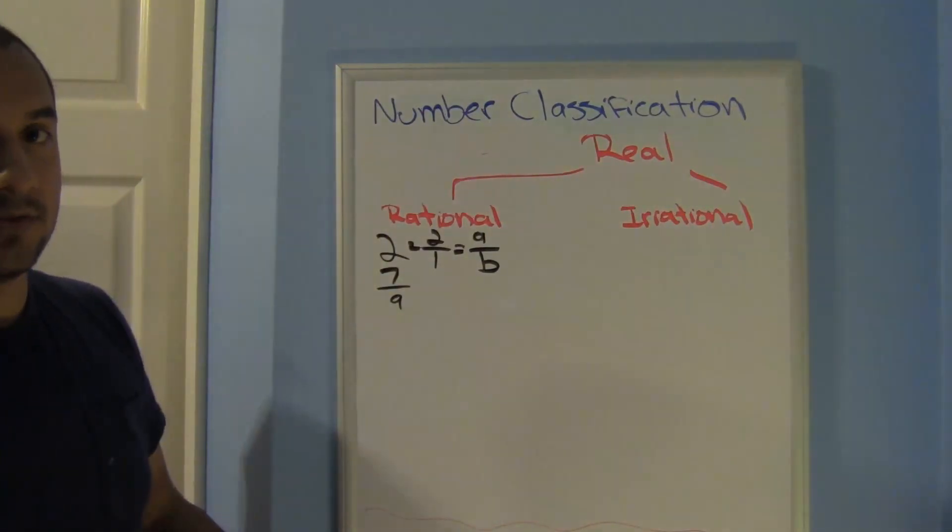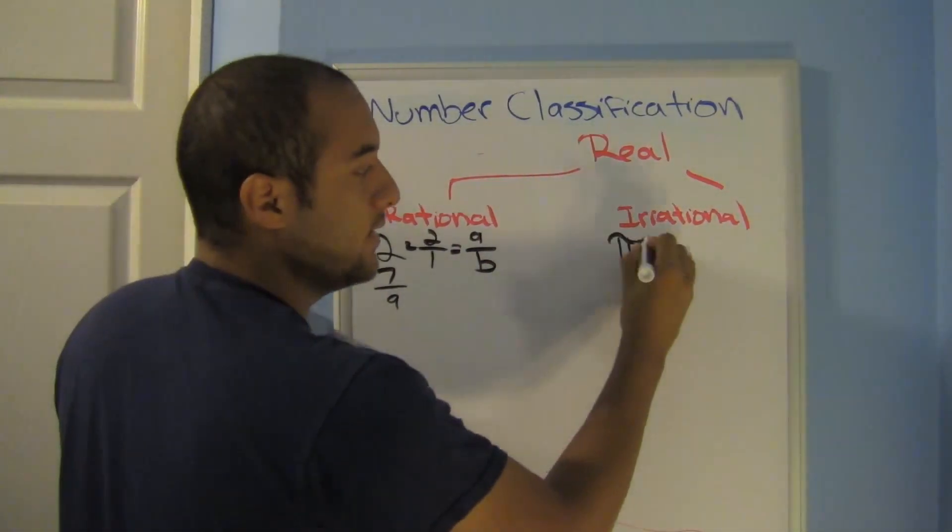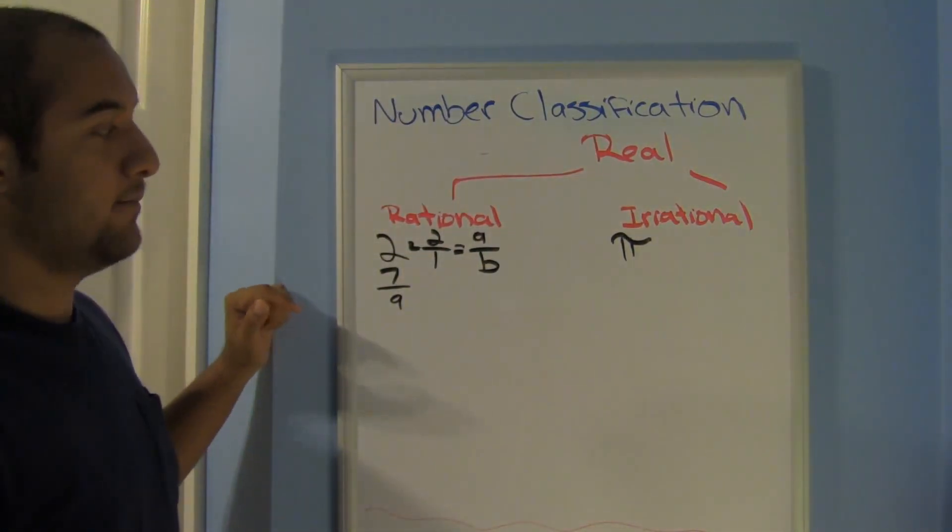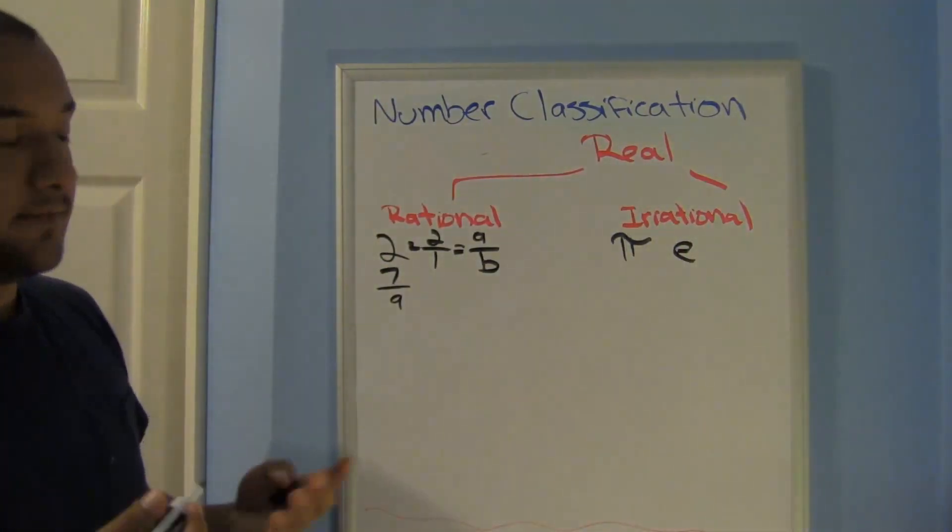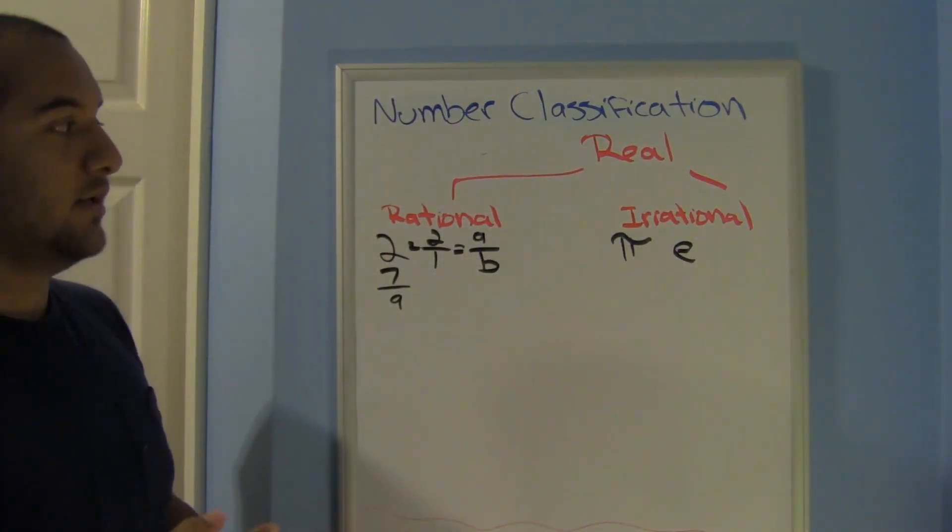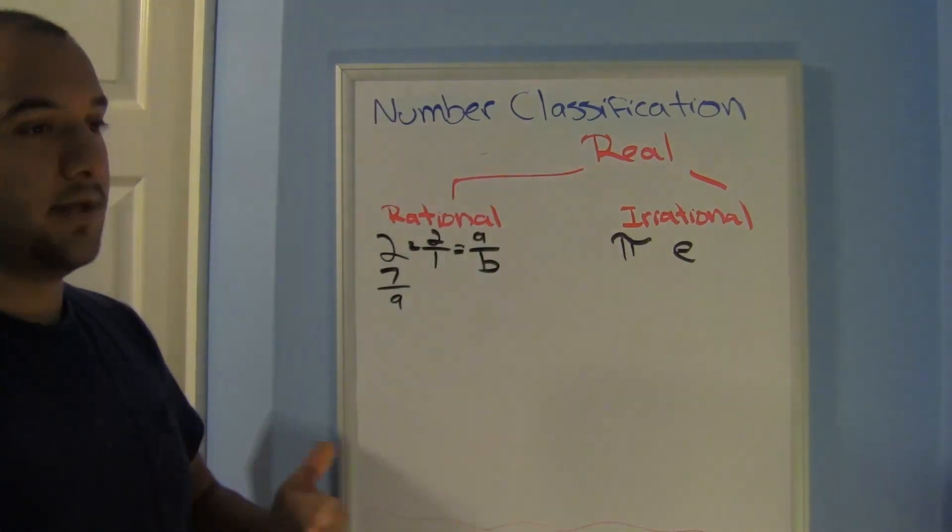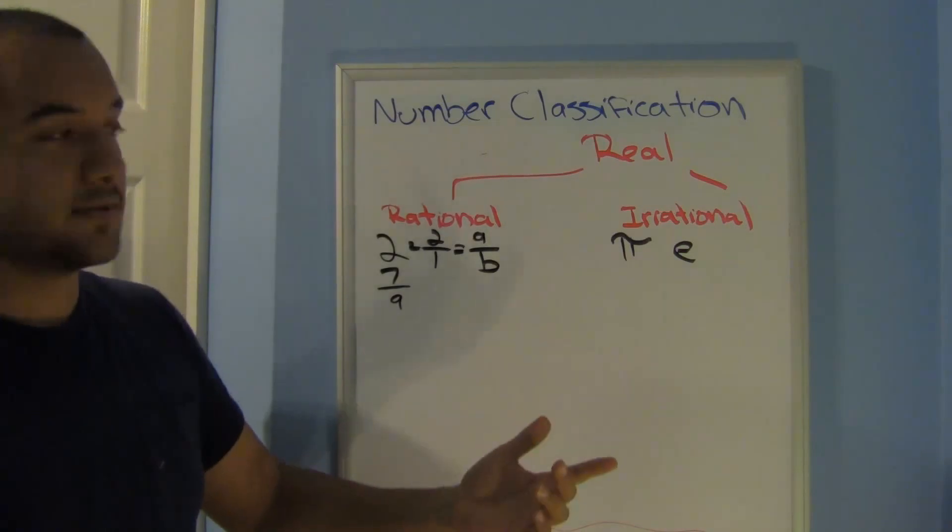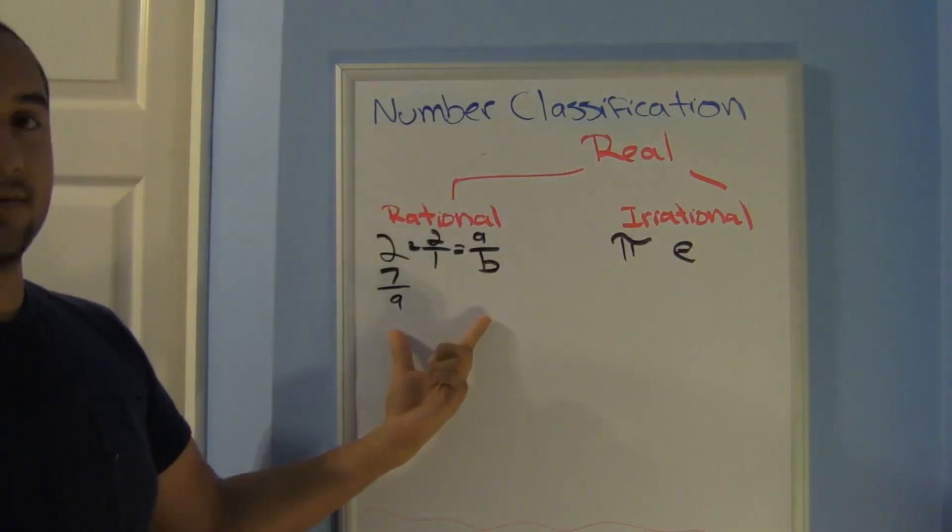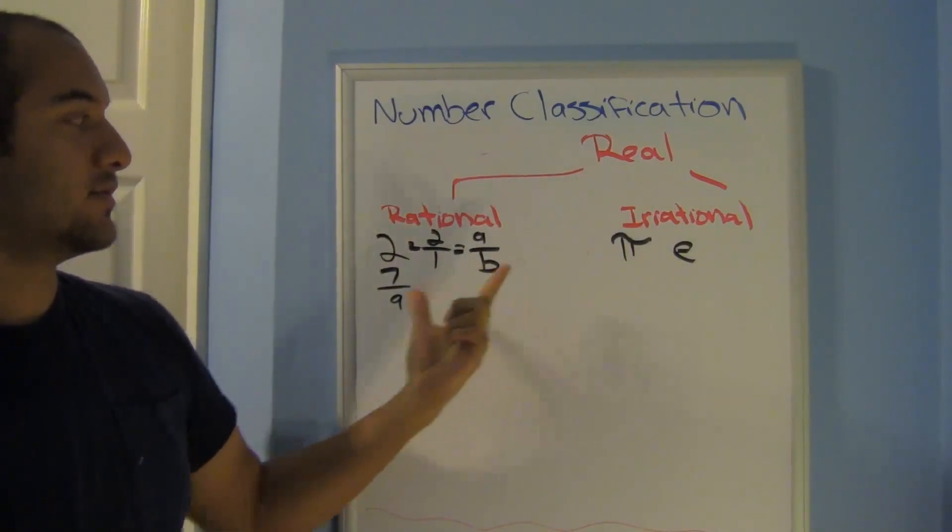Irrationals, though, I can't write those as a fraction. For example, you know some of these, like pi. I can't write that as a fraction. Or E, not a fraction. Those are irrational. And their decimals don't repeat after a decimal. There's no pattern, there's no set pattern. So because there's no set pattern, I can't write it as a fraction. Therefore, I can't say that these numbers are rational.